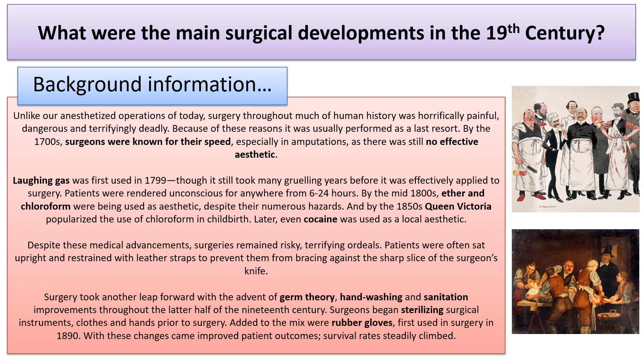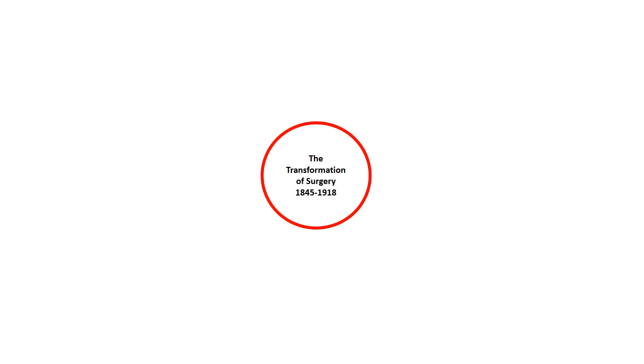Surgery took another leap forward with the advent of germ theory, hand washing and sanitation improvements throughout the latter half of the 19th century. Surgeons began sterilising surgical instruments, clothes and hands prior to surgery. Added to the mix were rubber gloves, first used in surgery in 1890. With these changes came improved patient outcomes, so survival rates steadily climbed.